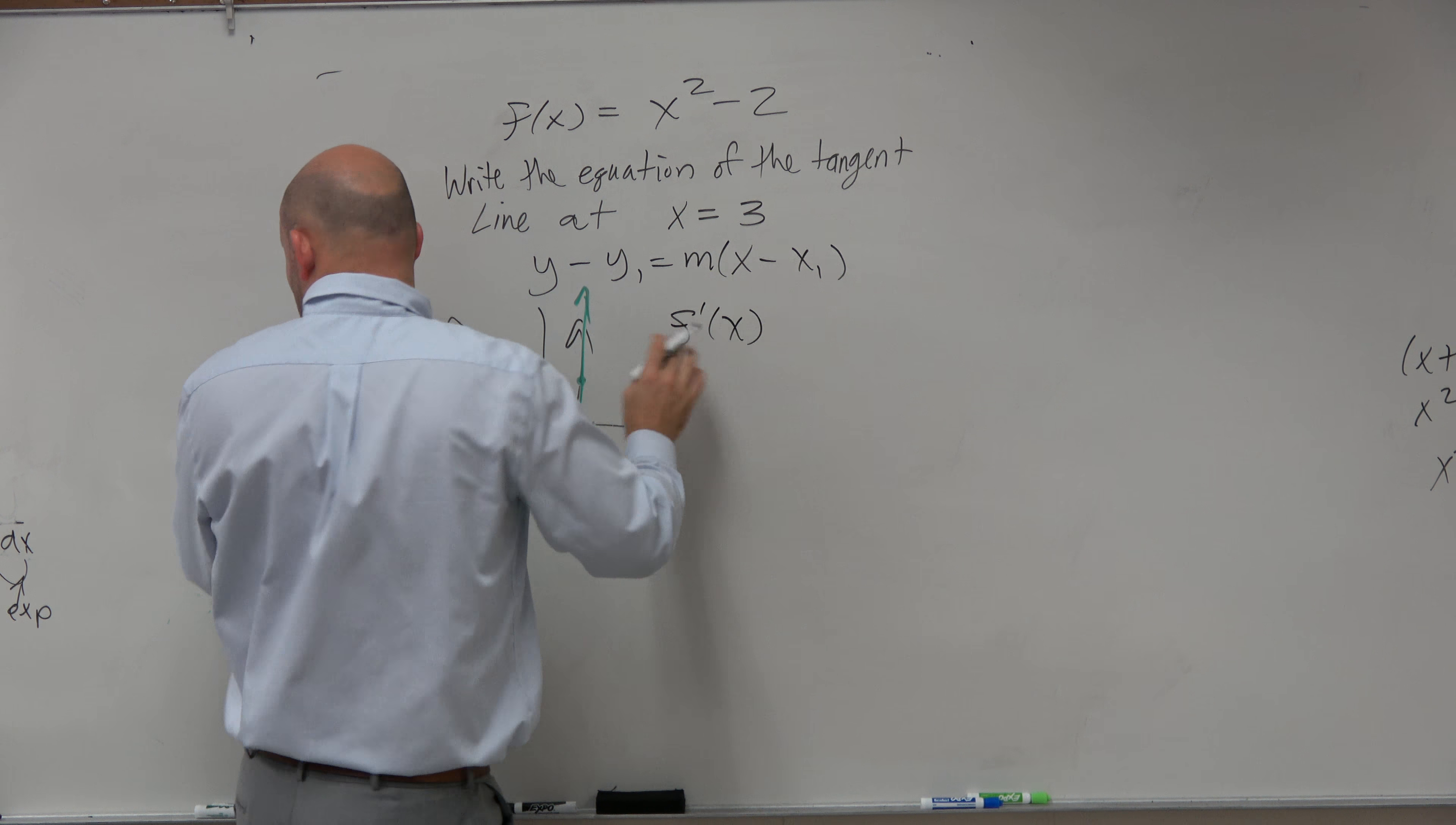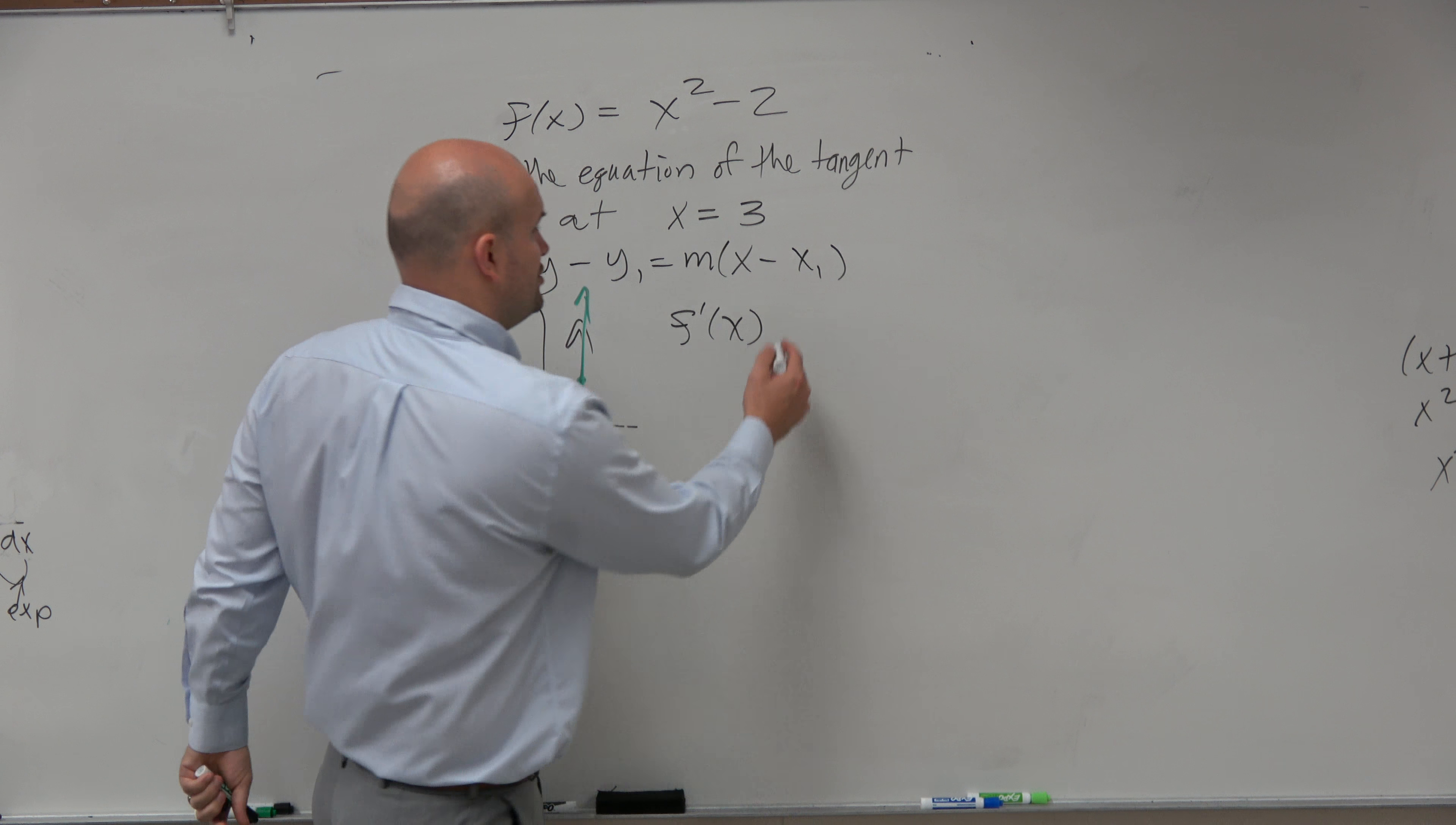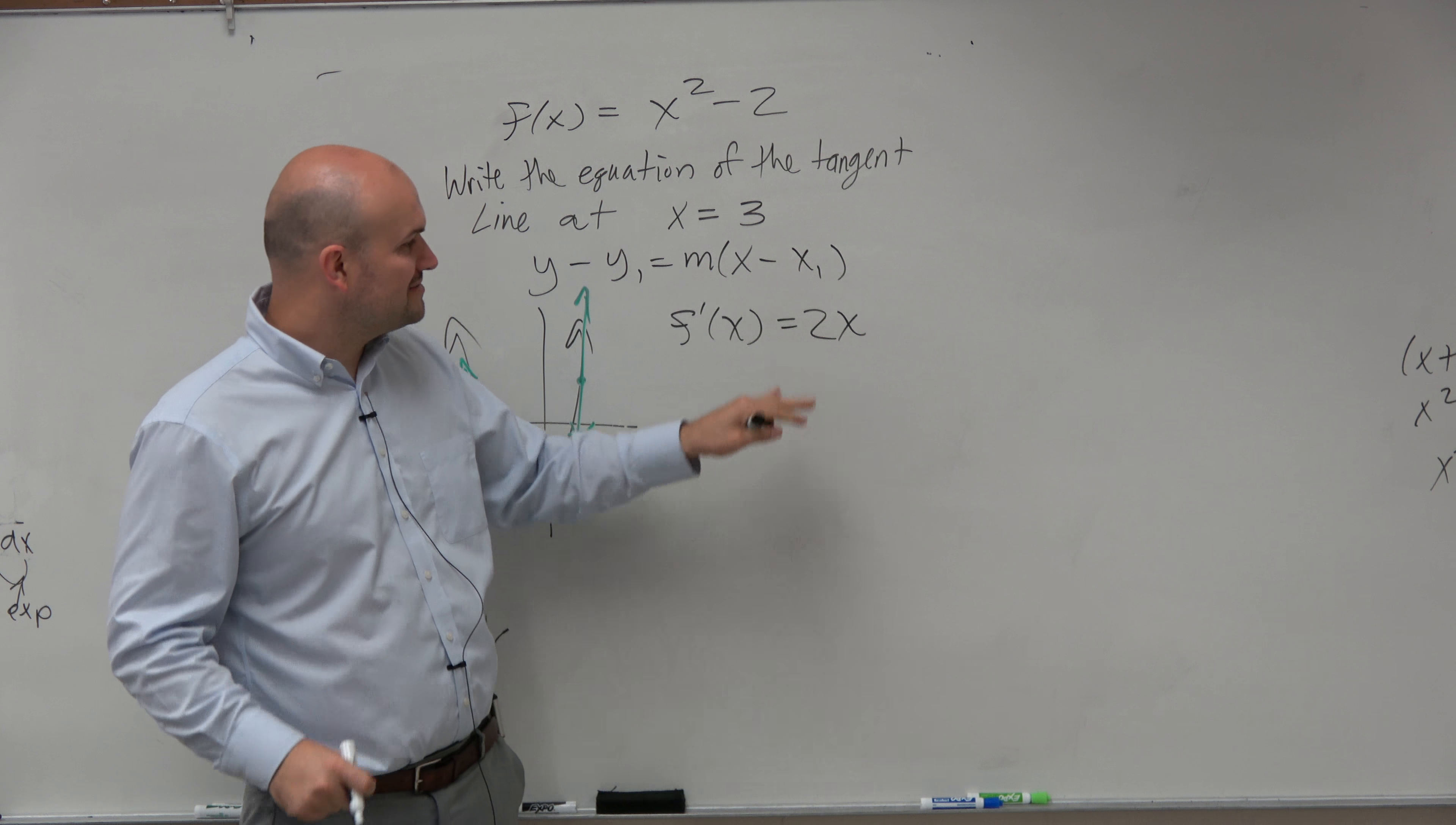So f prime of x, which is just saying we're finding the derivative. The derivative of x squared we know is 2x, and then the derivative of negative 2 is 0.